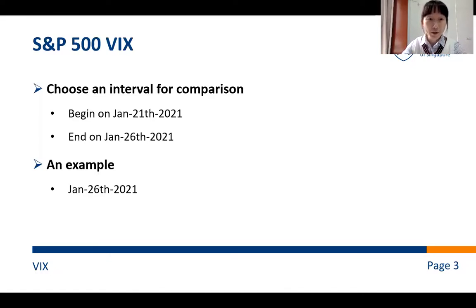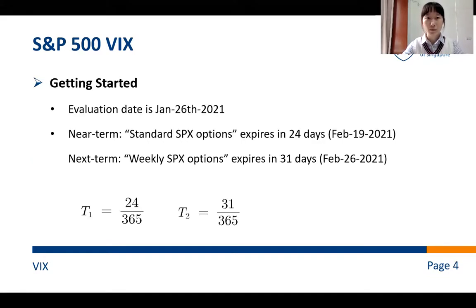This video will contain three parts. For each part, we'll introduce the U.S. and China situation separately. First of all, let's focus on SP500 VIX. In order to check whether our code is correct, we first determine a time period for comparison, which begins on January 21st and ends on January 26th. Let's take January 26th as an example. Recall the VIX definition.